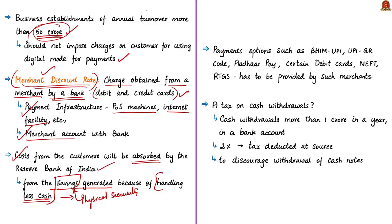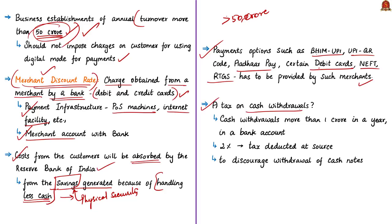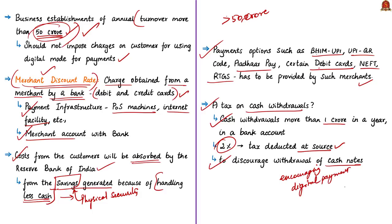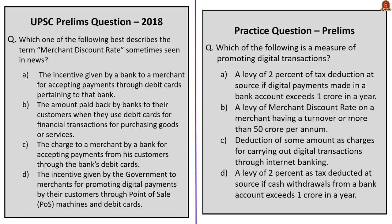The Finance Minister has stated that banks should not charge the Merchant Discount Rate from merchants with a turnover of more than ₹50 crore. These merchants are asked to provide payment options such as BHIM UPI, UPI QR code, other pay apps, debit cards, NEFT, and RTGS to customers to promote digital payments. The budget also proposed a tax on cash withdrawals — if cash withdrawals exceed ₹1 crore in a year, the government will charge 2% of the amount as tax deducted at source from the bank account. This discourages cash withdrawals, thereby encouraging the use of digital payments. These are the two important steps reported for promoting a cashless economy.